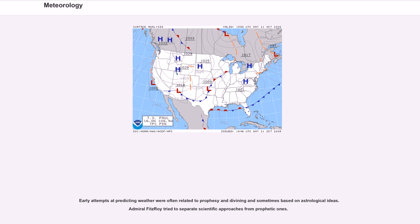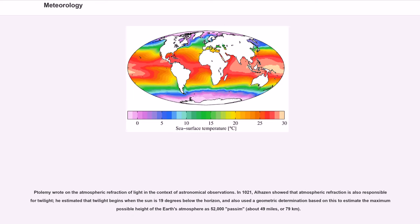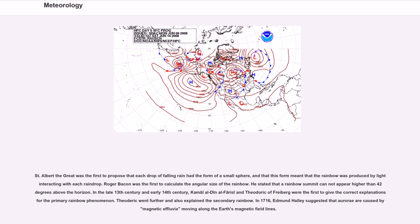Ptolemy wrote on the atmospheric refraction of light in the context of astronomical observations. In 1021, Al-Hazen showed that atmospheric refraction is also responsible for twilight. He estimated that twilight begins when the sun is 19 degrees below the horizon, and also used a geometric determination based on this to estimate the maximum possible height of the Earth's atmosphere as 52,000 passim, about 49 miles, or 79 kilometers. Saint Albert the Great was the first to propose that each drop of falling rain had the form of a small sphere. Roger Bacon was the first to calculate the angular size of the rainbow, stating that a rainbow summit cannot appear higher than 42 degrees above the horizon.